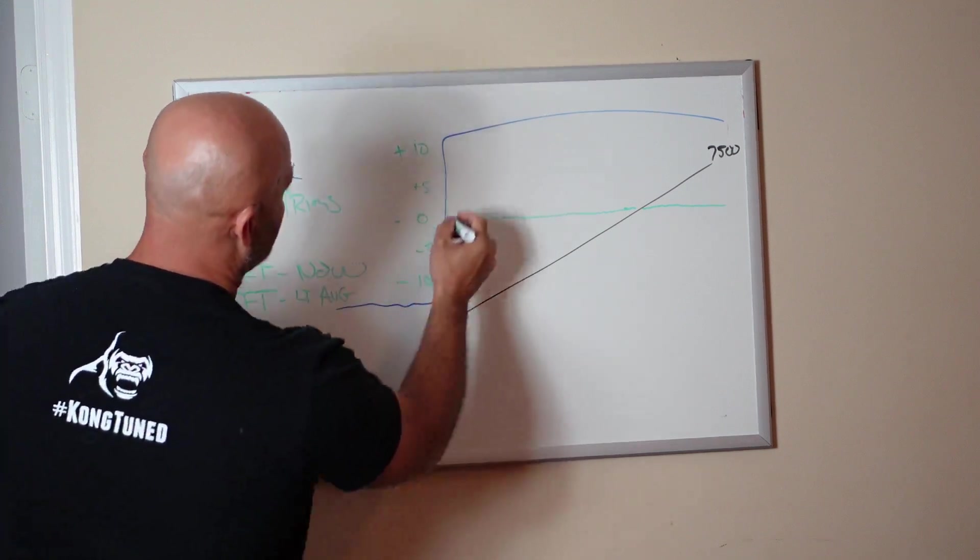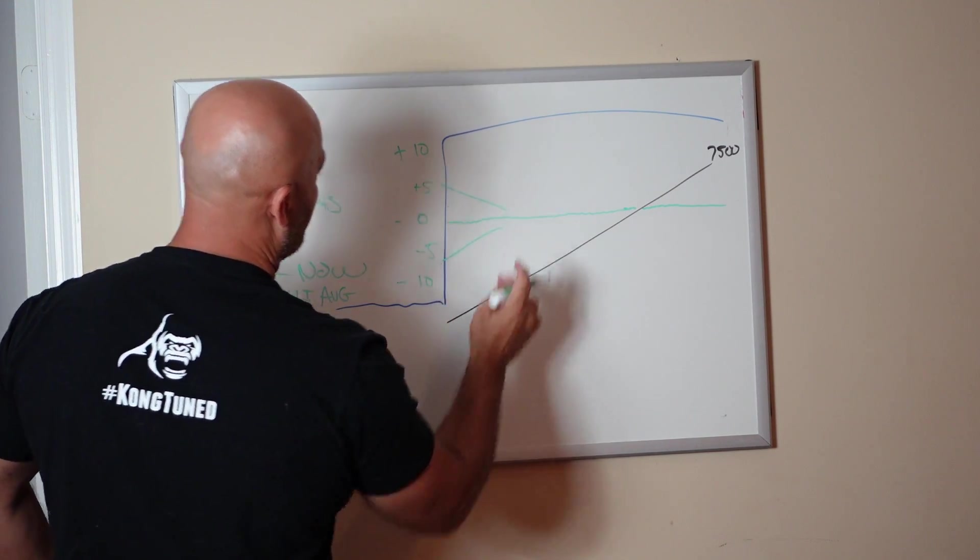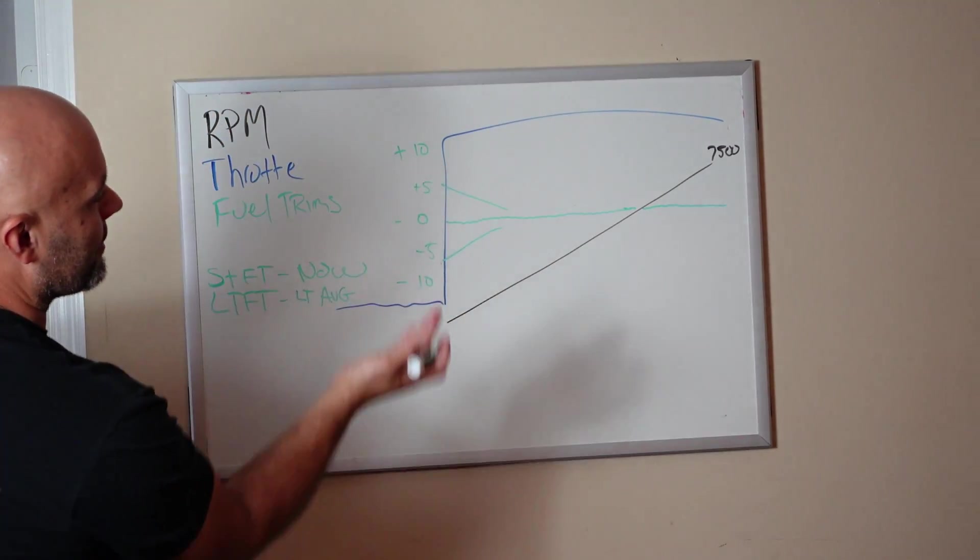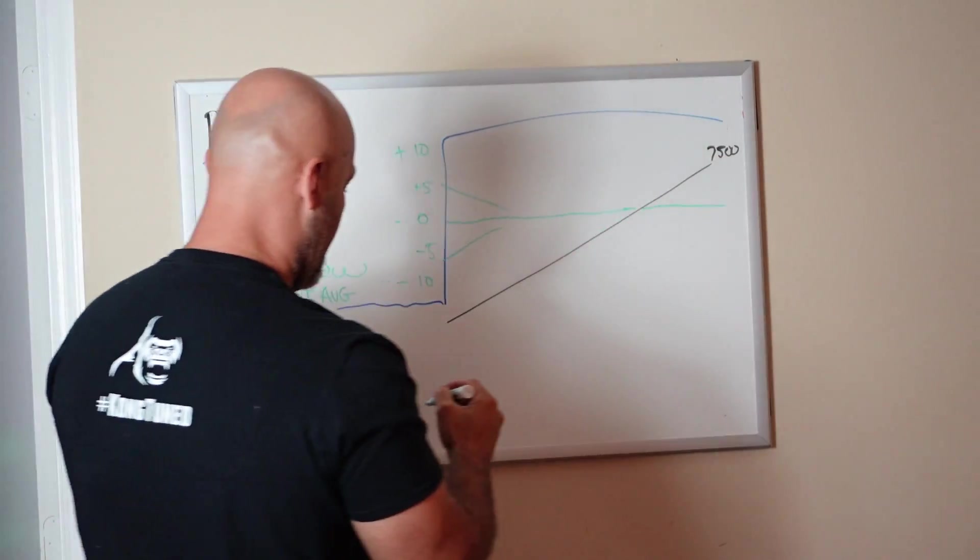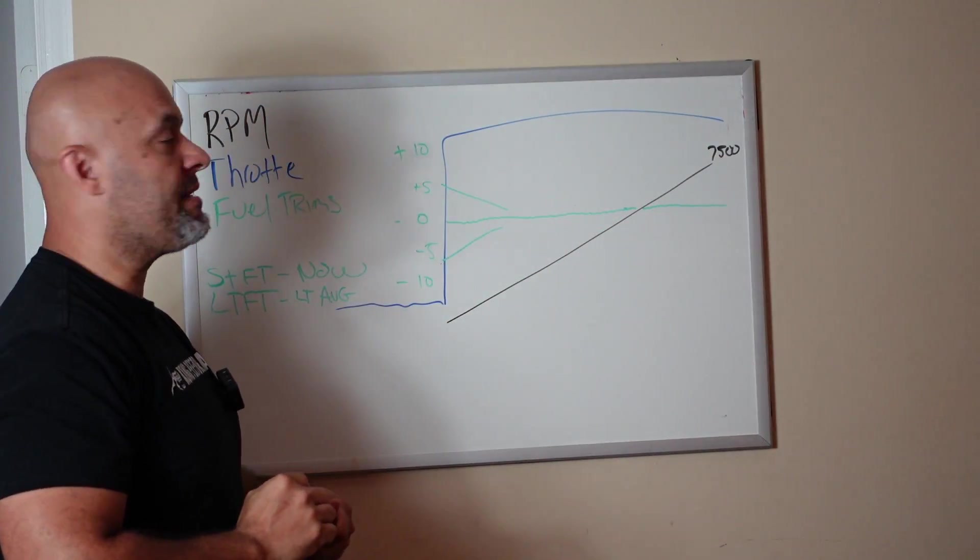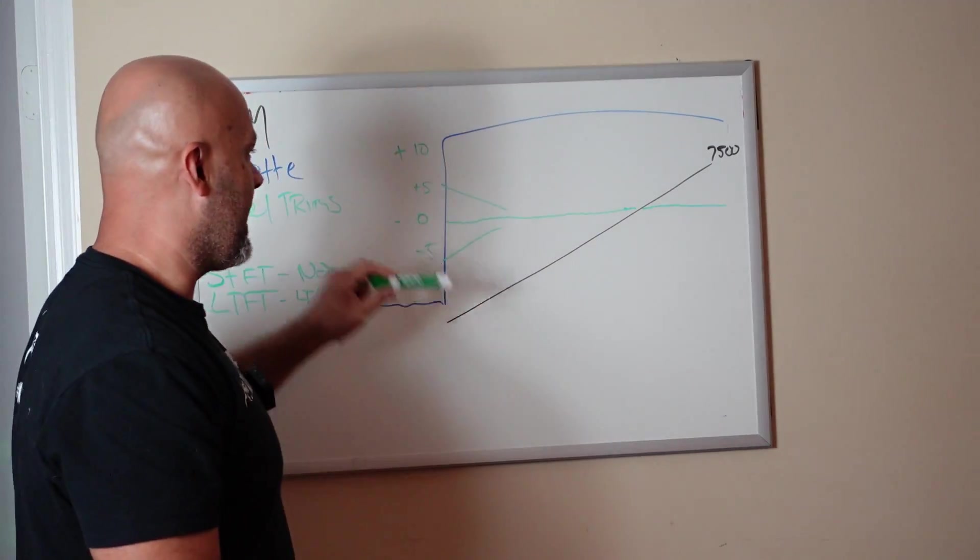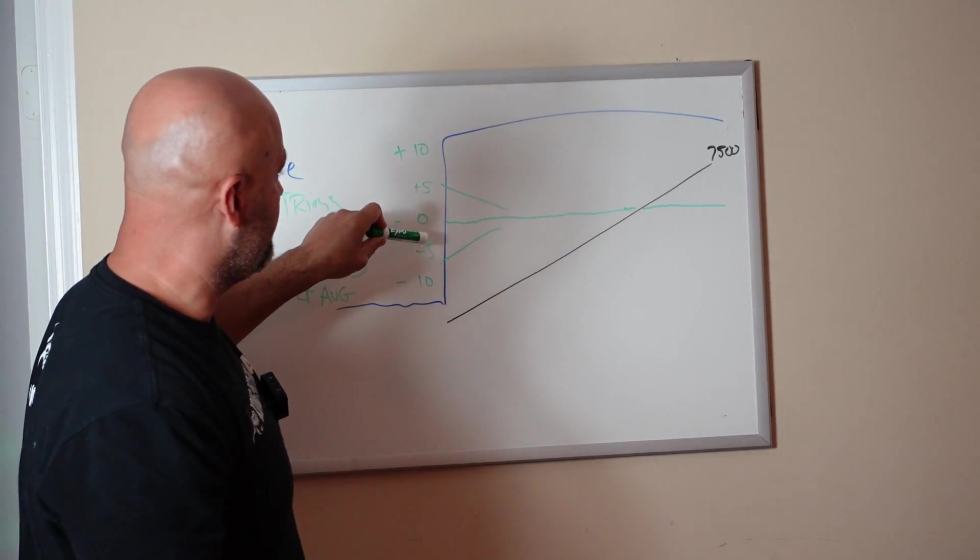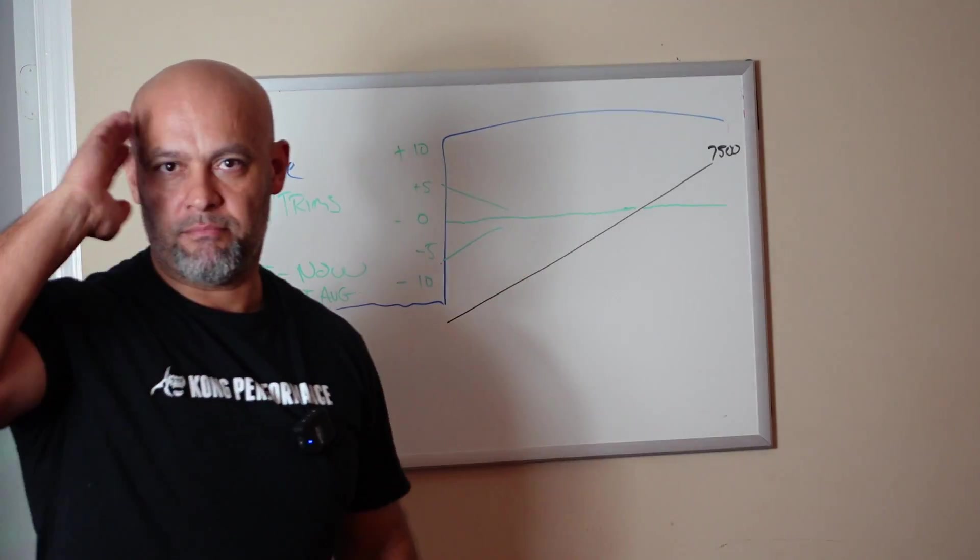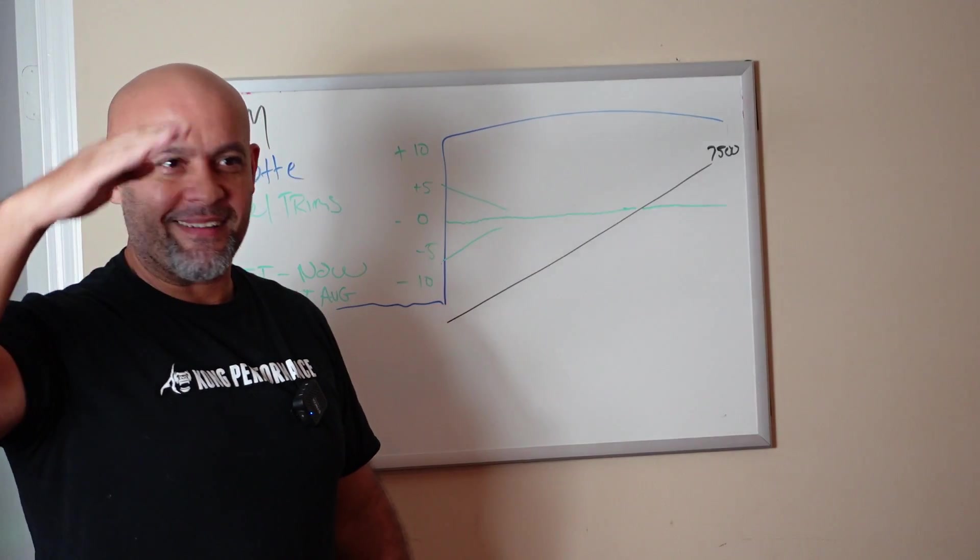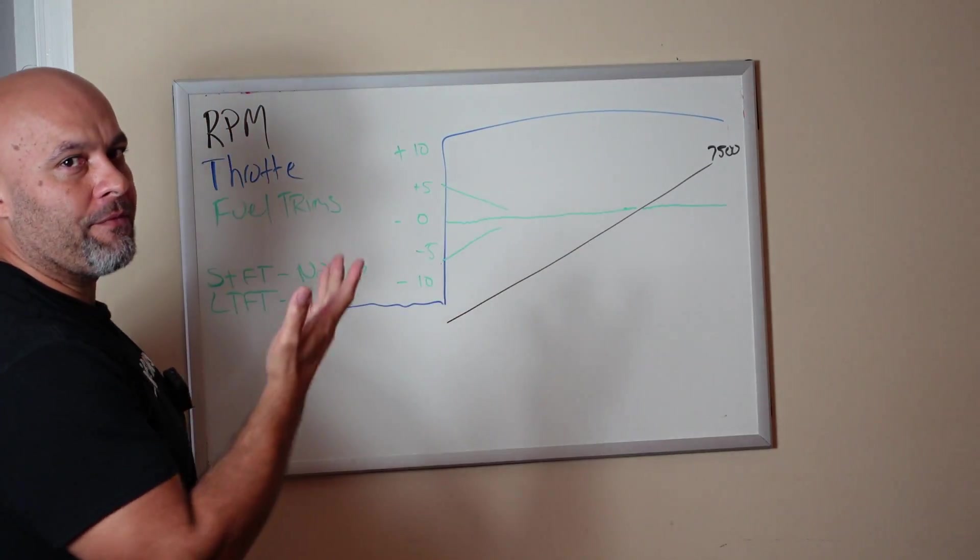This is my threshold. This is where I like the fuel trims to be. I don't like them to vary all that much, boosted or NA, doesn't matter. Most of the time when the WOT log looks that good, plus/minus 5%, that's Ford spec. See ya, bye. You're good, have a good day.